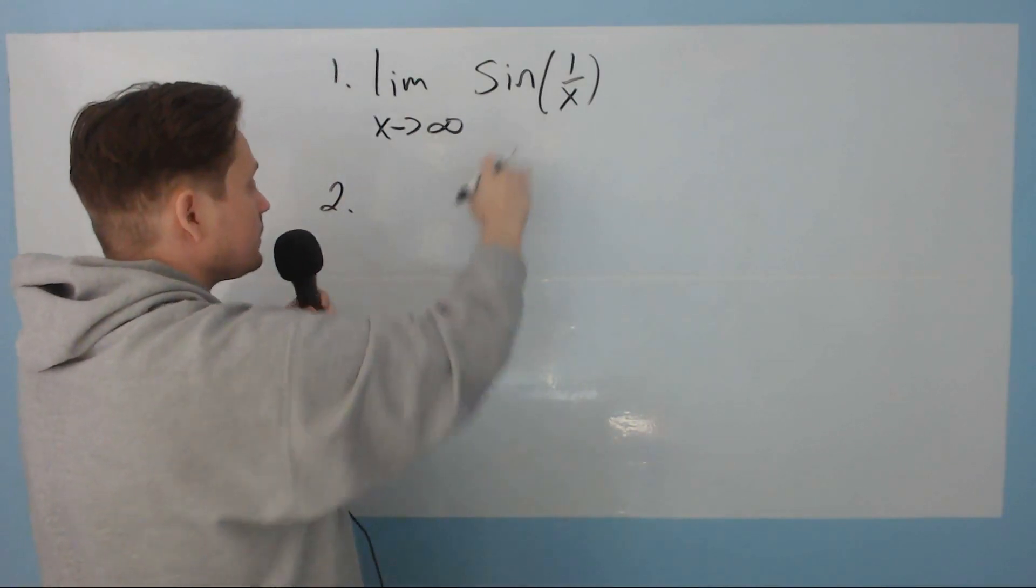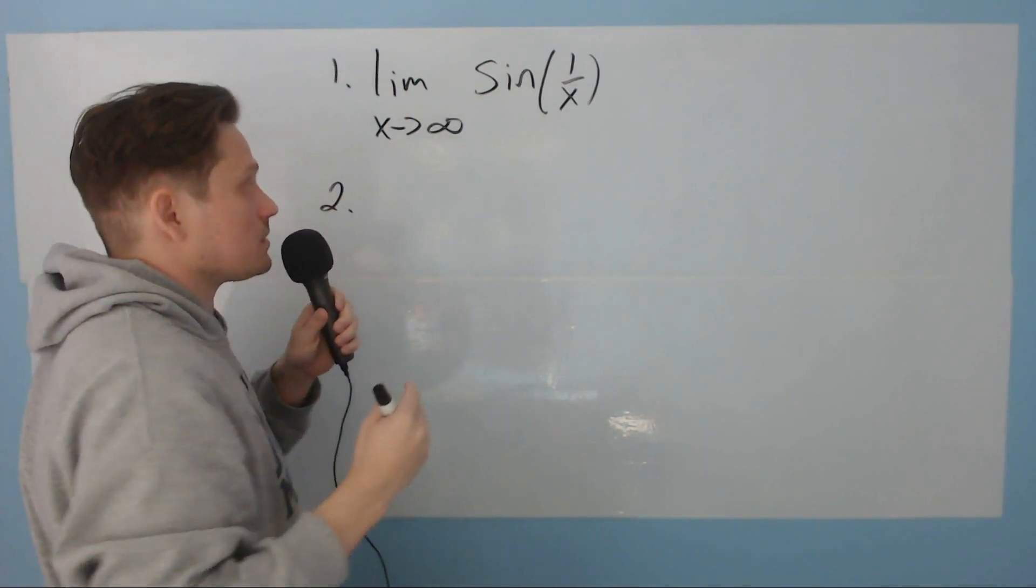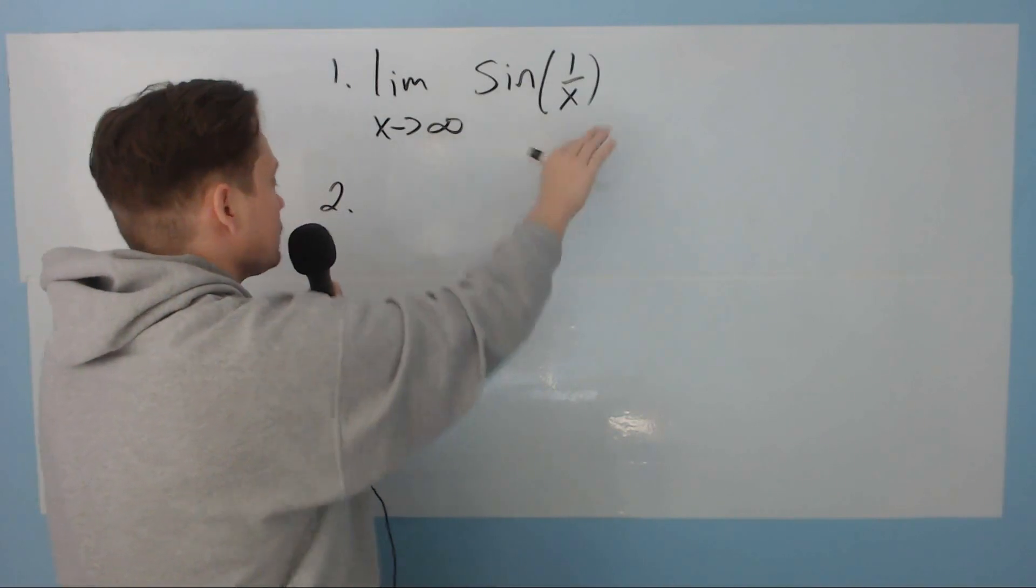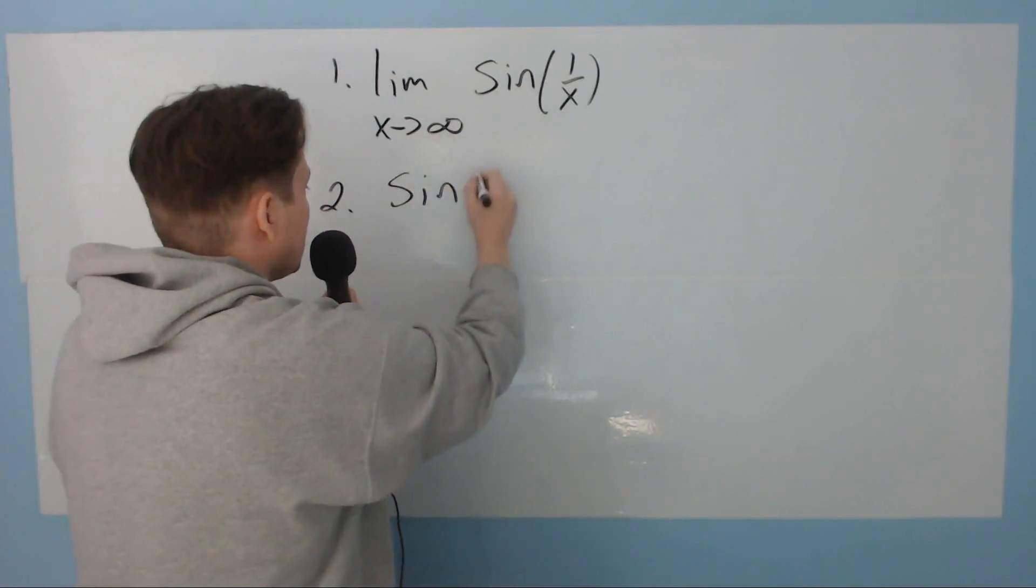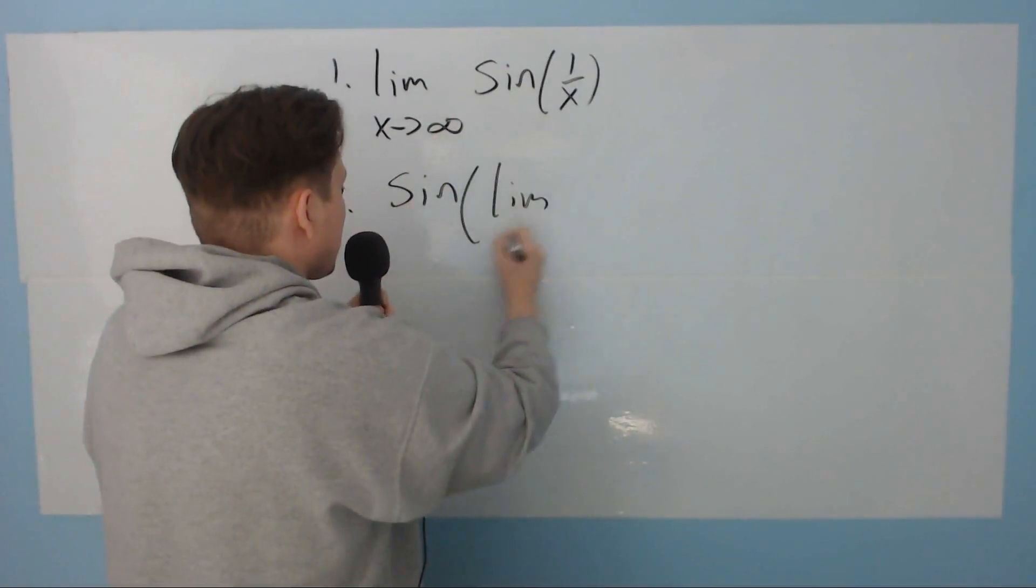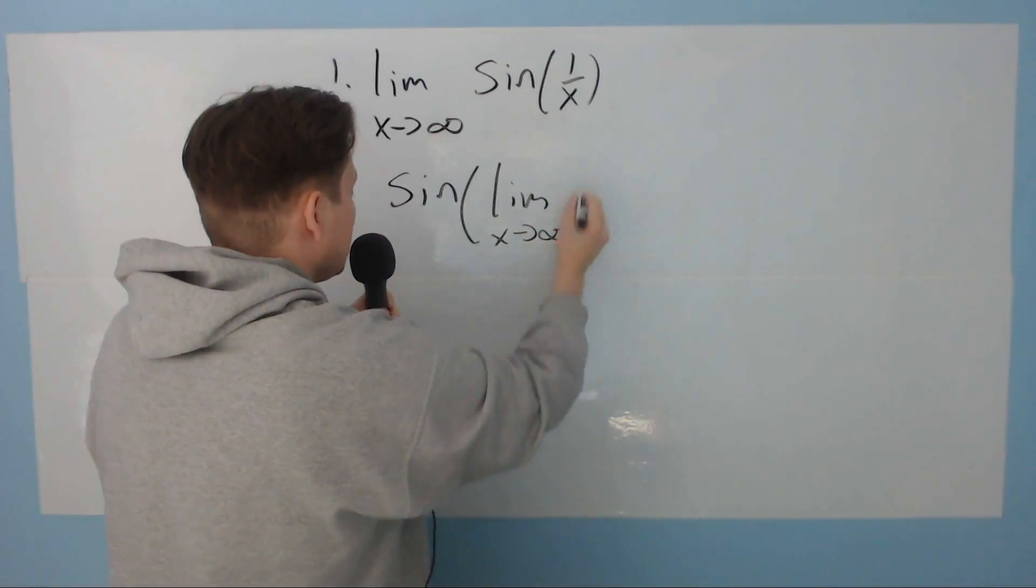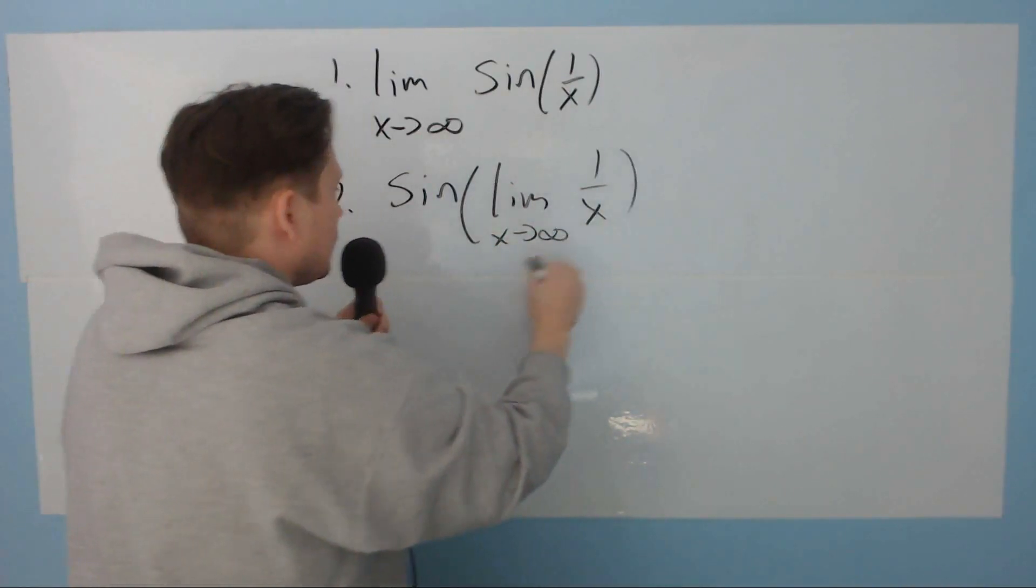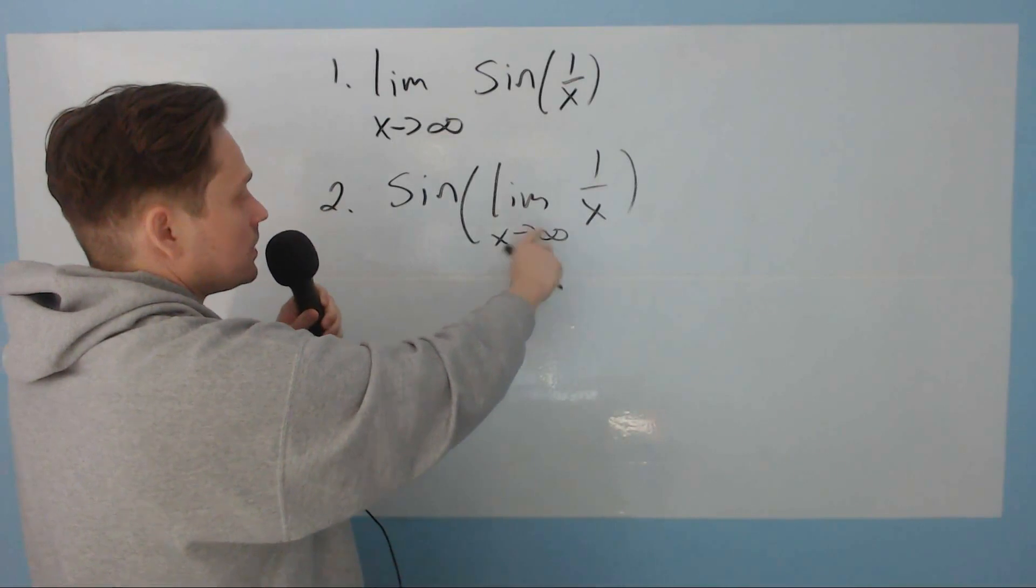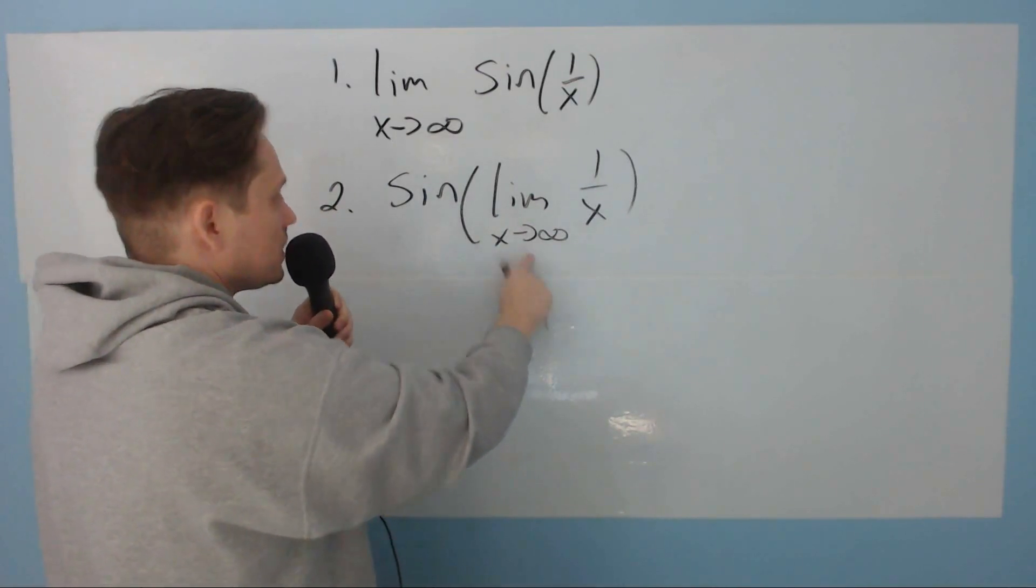Step 1, step 2. The sine function is continuous, which basically tells you that you can just slip the limit into the function, so you end up with sine of the limit as x goes to positive infinity of 1 over x.